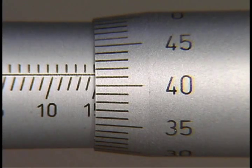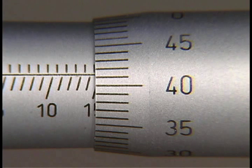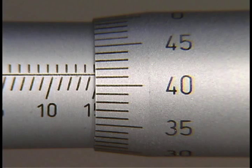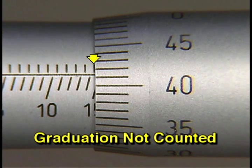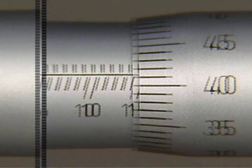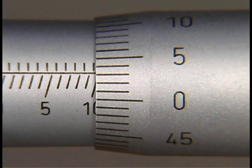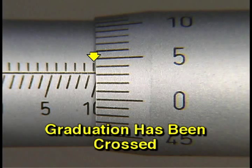If you're not sure whether or not the half millimeter graduation has been crossed, look at the thimble scale. If the thimble reading is in the high range, the graduation has not been crossed and is not counted. But if the thimble reading is in the low range, the graduation has been crossed and is added to the measurement.